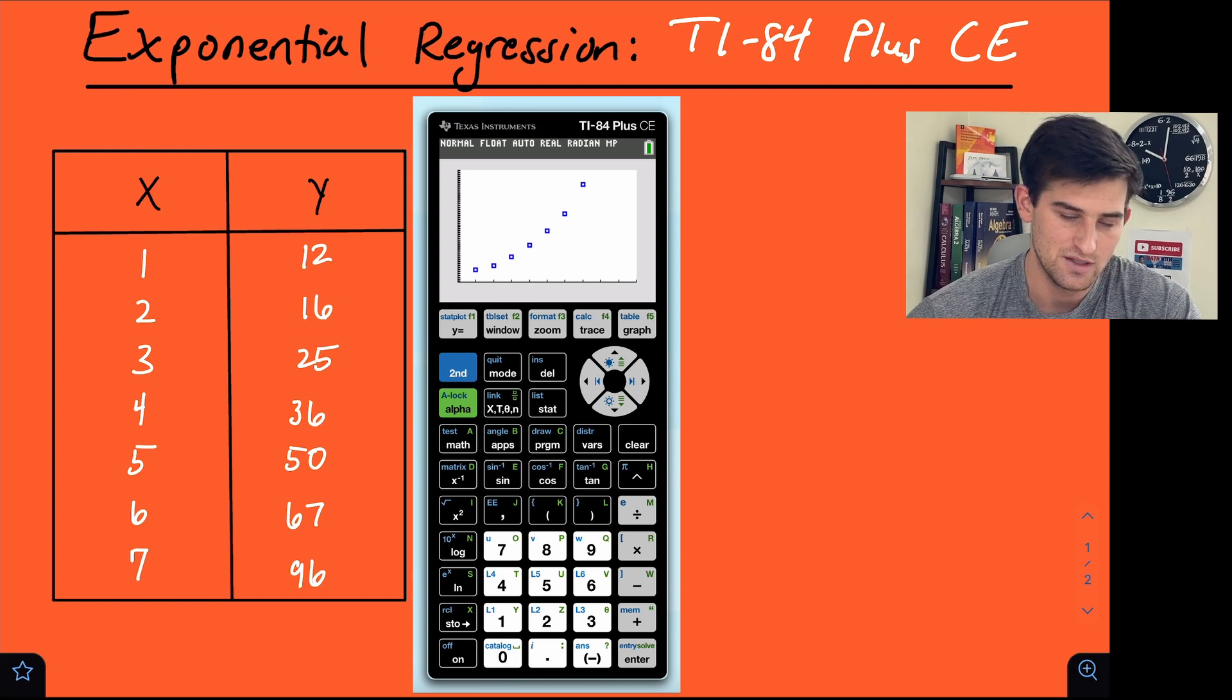Now for y max, we need to see at least to 96. So let's just change this to 110 just to give us a little bit of room past that. So now we should be good. We hit graph and we see our scatter plot. So we can tell it is exponential because of our curve that we see. And so now that is step one. We have to graph that.